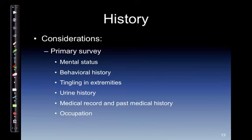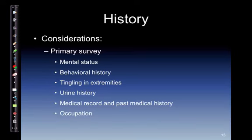History considerations — primary survey: we should always do a mental status check. Reports of altered mental status such as lethargy, agitation, or confusion should be seen as possible signs of uremia. Behavioral history may indicate a change suggestive of delirium. Tingling in the extremities may indicate peripheral nervous system involvement. Urine history: a downward trend in urine output leading to oliguria is suggestive of progressive deterioration of kidney function. Sudden cessation of urine output or anuria would raise suspicion of occlusion, maybe even a kidney stone.